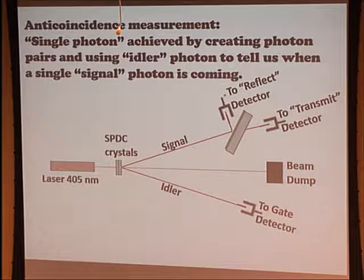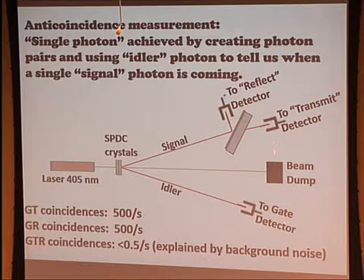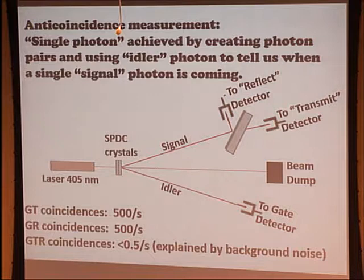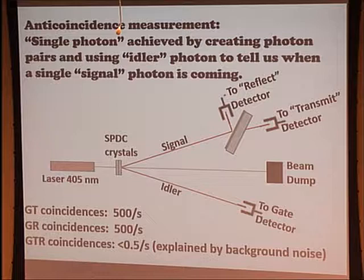We measure routinely in the junior optics laboratory at Harvey Mudd, for instance, 500 coincidences per second between this detector and this detector, and about 500 a second between this one and this one. So when there's a photon over here, there's a photon somewhere over here, and it goes here or it goes there. And if you measure, when there's a photon over here, how often does light go both ways at the same time? Zero — or as close to zero as an experimentalist would be happy to accept — a small rate that can be explained by other sources of noise that we know about and can calibrate in the system.